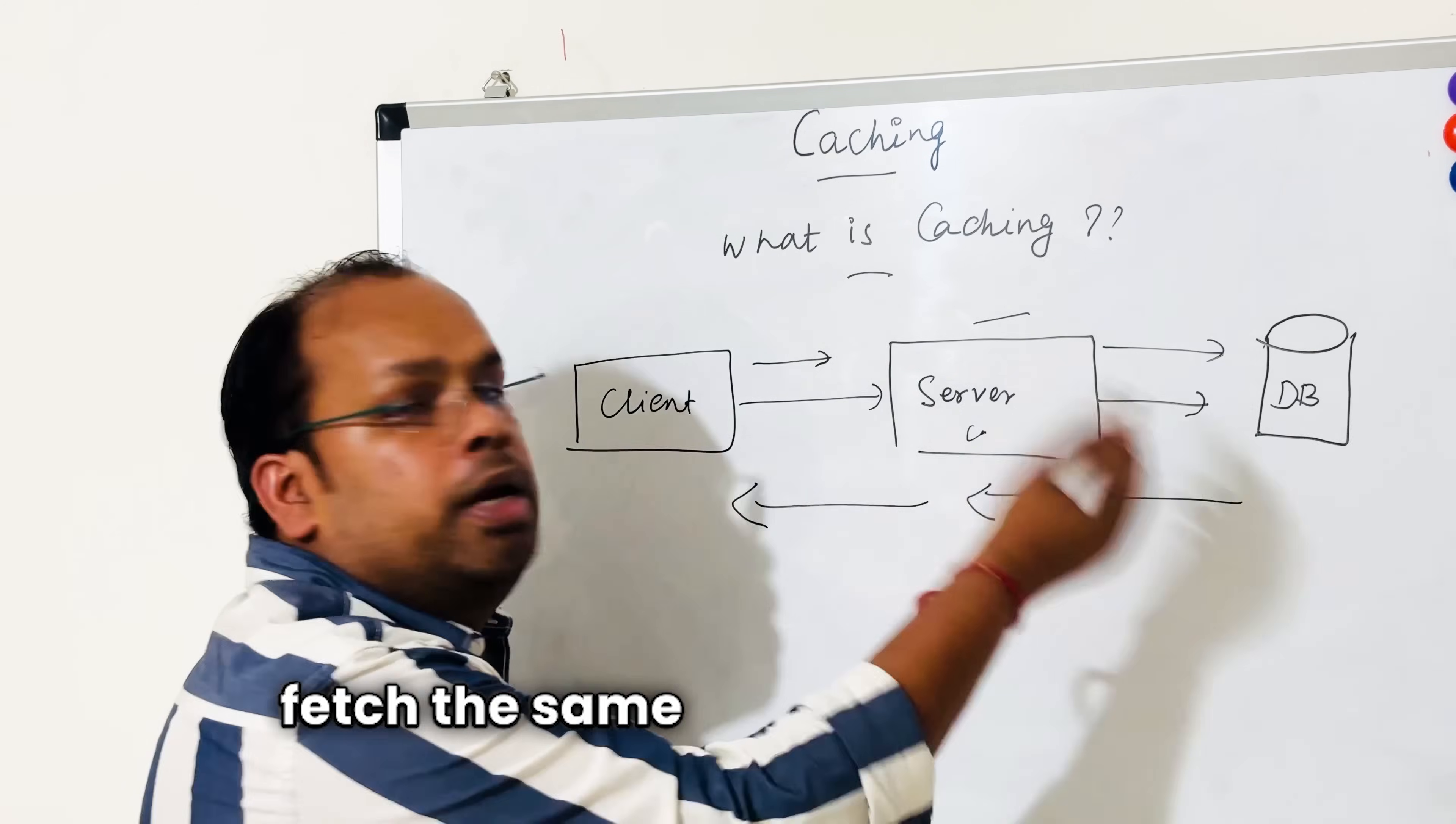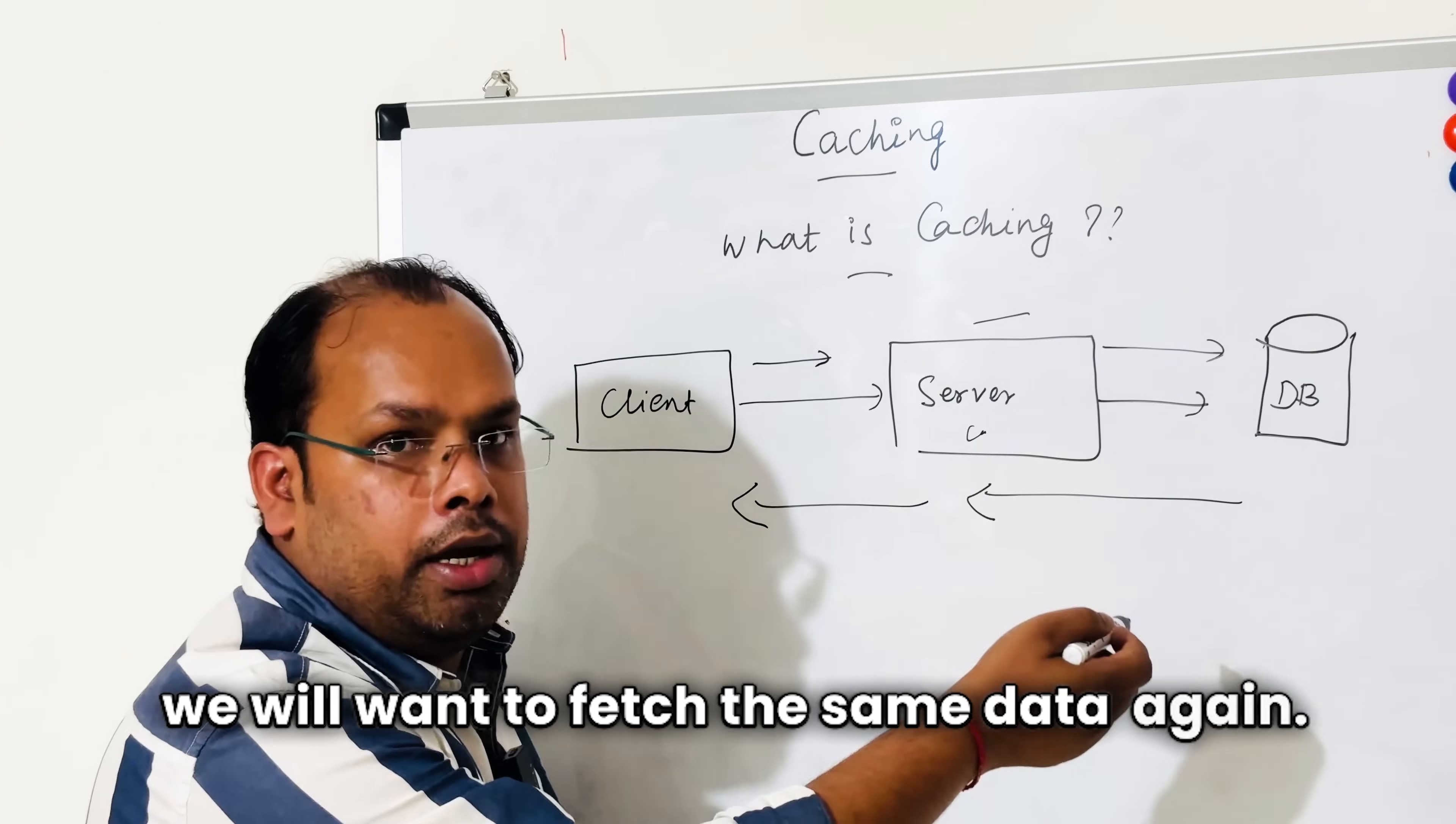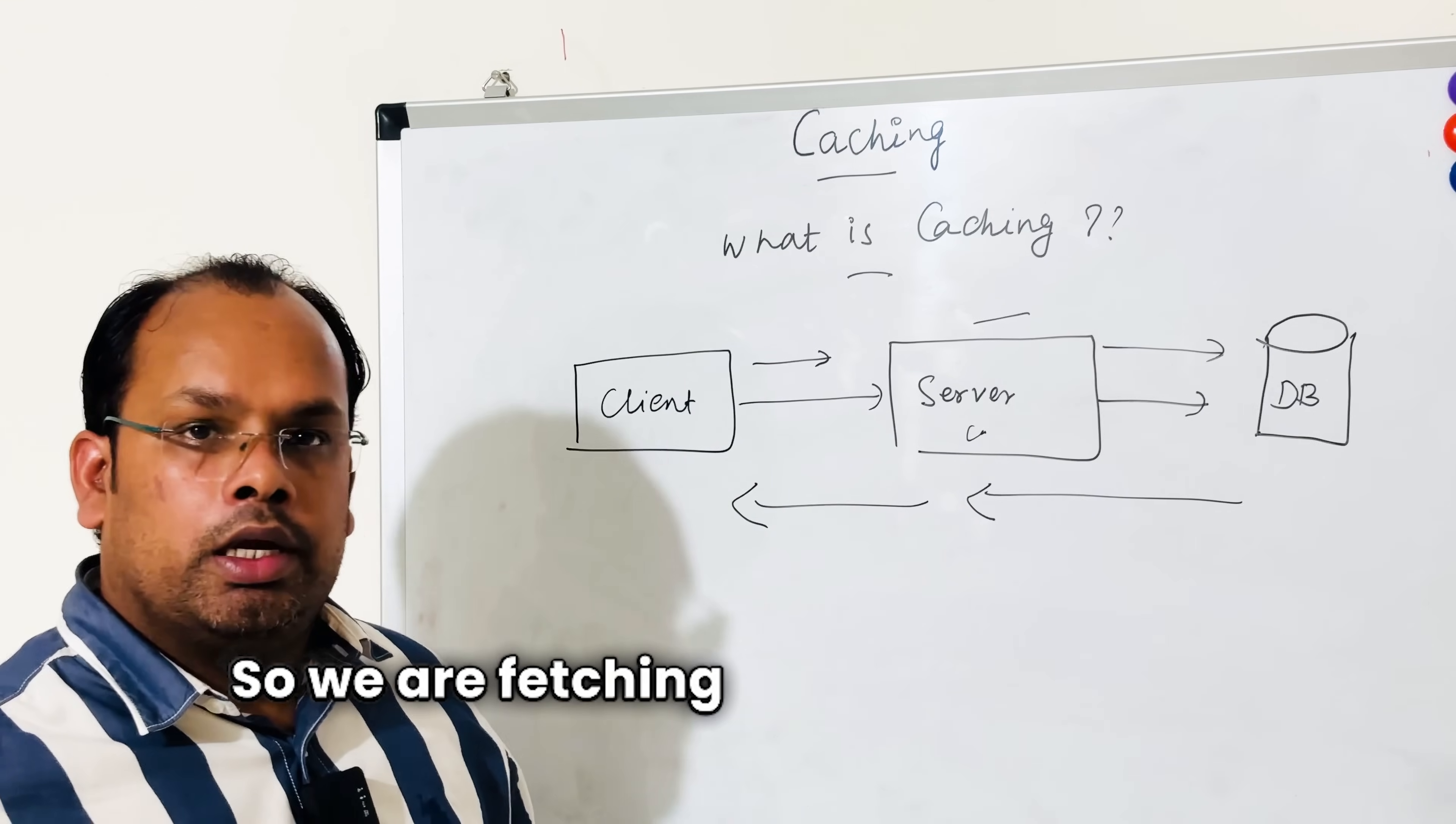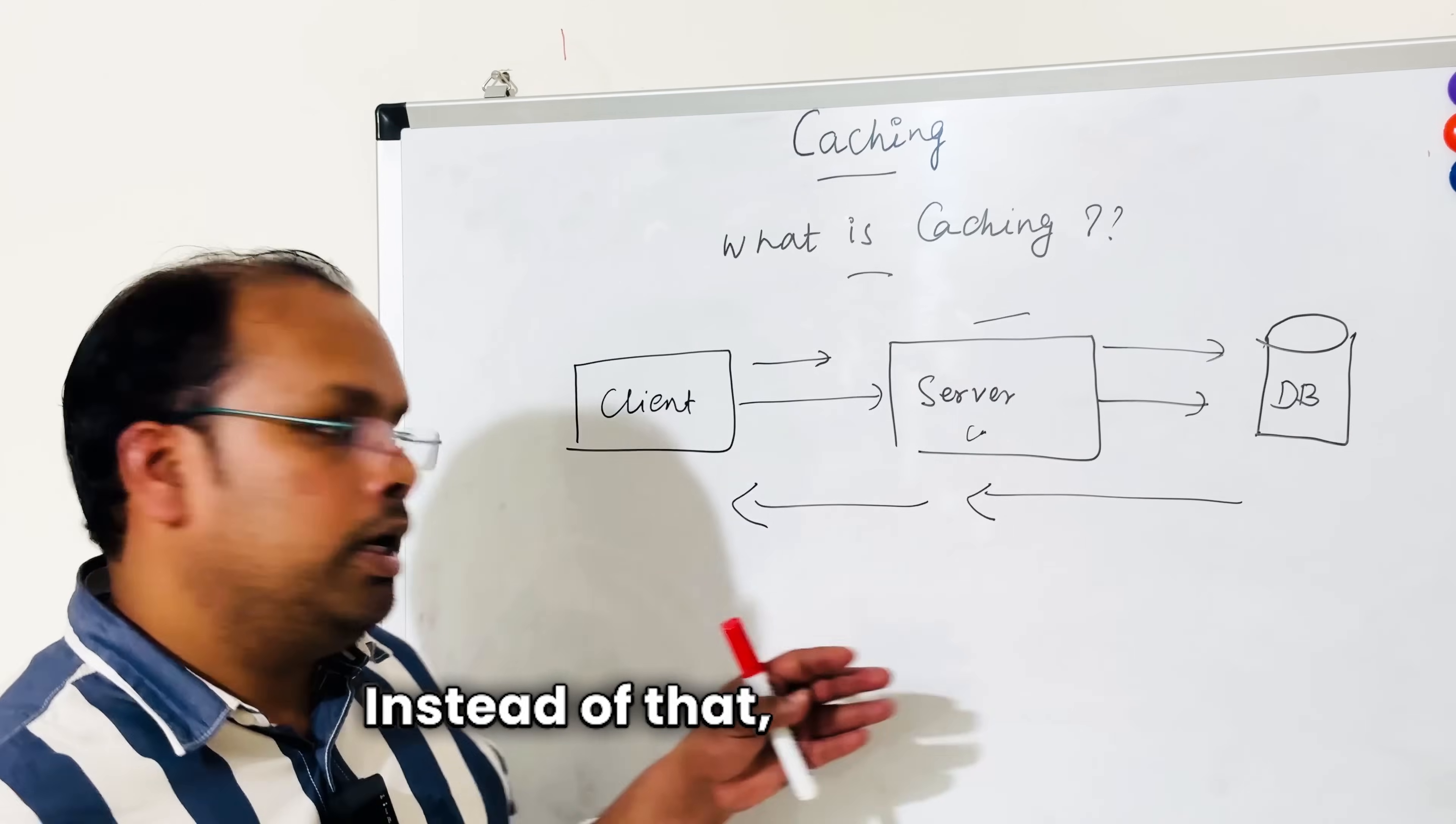So what will happen? Request goes, and this server does some computation or runs the business logic and fetches the data from the database and responds back. If after some time we fetch the same data again, the same thing follows again. After two minutes, after five minutes, we want to fetch the same data again, then this entire cycle will be repeated. So we are fetching the same data point frequently and hitting the database again and again.